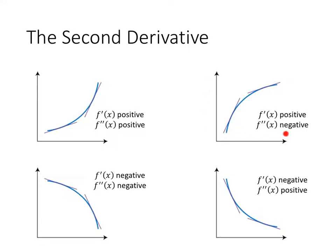In this example, my function is still increasing — f prime of x is still positive. But my f double prime is negative, which means my slope is decreasing. So the slope is still positive, but it's going down as I go from left to right.